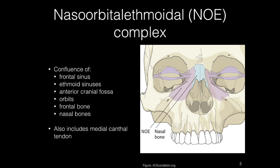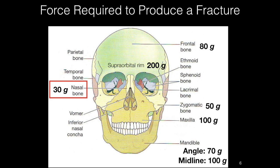The nasal bones are doubly at risk for fracture because they are protruding but also because of lack of support and relatively thin bone. The maximum tolerable impact force before nasal fracture is approximately 30 g's. These forces are relatively small compared to those required for other fractures of the facial skeleton. The next most vulnerable is the zygomatic bone, requiring over one and a half times the force to break. The supraorbital rim is one of the strongest buttresses on the face, requiring 200 g's to fracture.